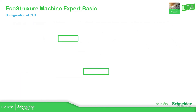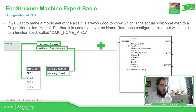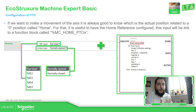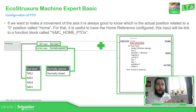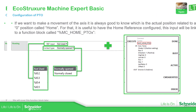Another important parameter — not mandatory but important — is homing. If we want to make a movement, it's important to be referenced to a home position. We need to define a reference here in the homing configuration, and we can link that to one of the digital inputs on the controller. We also have the option to specify whether the sensor is normally open or normally closed.